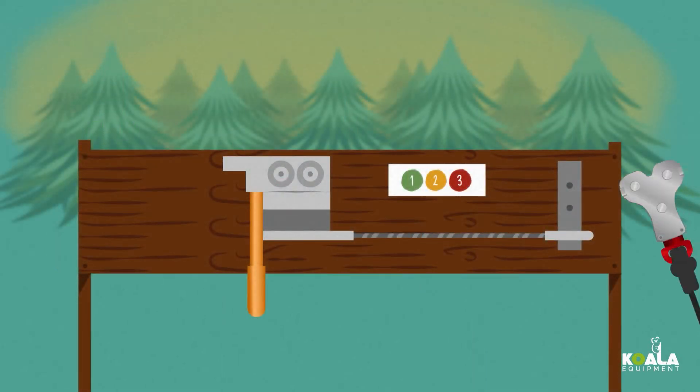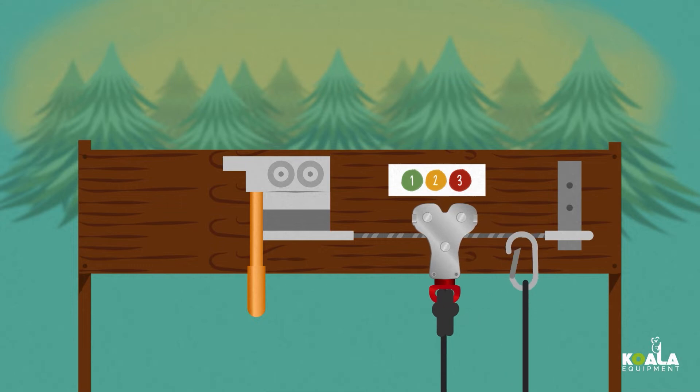First of all, connect your pulley, followed by your carabiner, onto the Lifeline wire rope. Slide your pulley up to the handle.